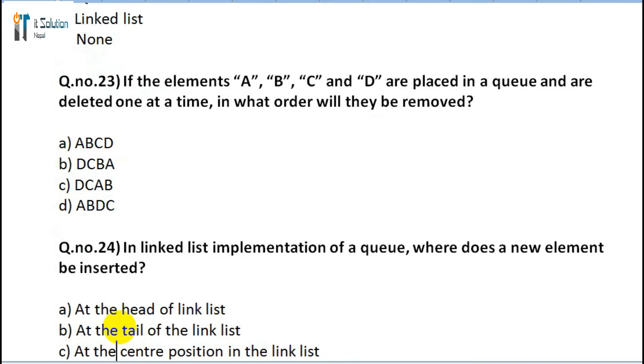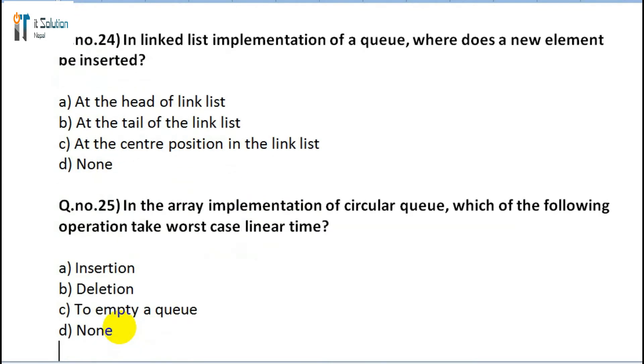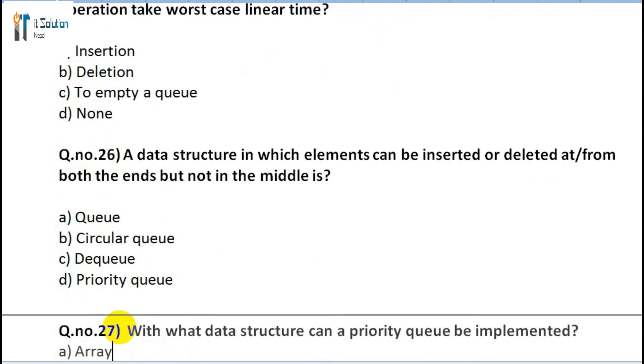Question 24: In linked list implementation of queue, where does a new element be inserted? A) At the head of the linked list, B) At the tail of the linked list, C) At the center position in the linked list, D) None. Question 25: In the array implementation of circular queue, which of the following operations take worst-case linear time? A) Insertion, B) Deletion, C) To empty the queue, D) None.